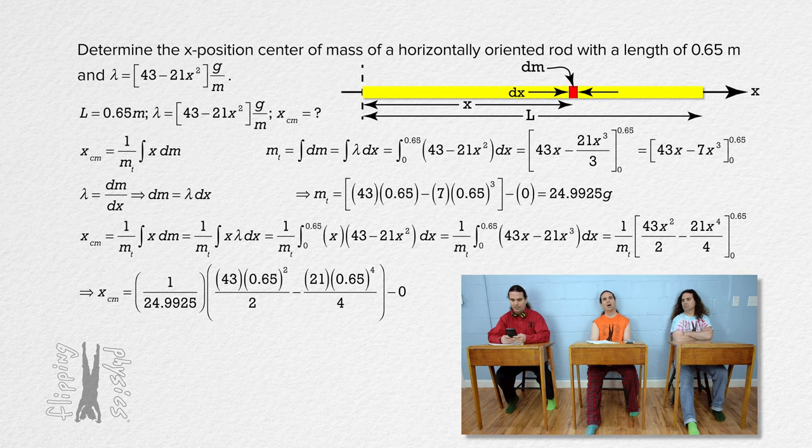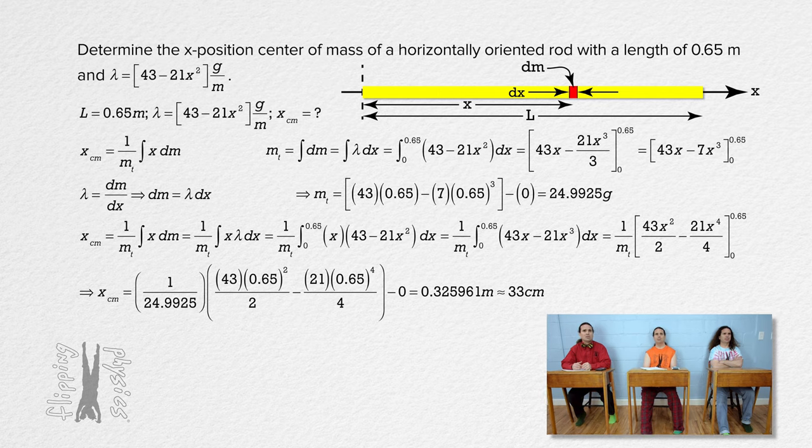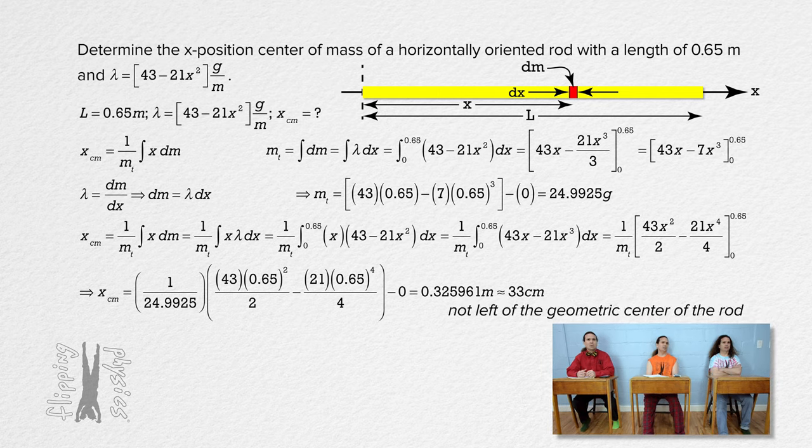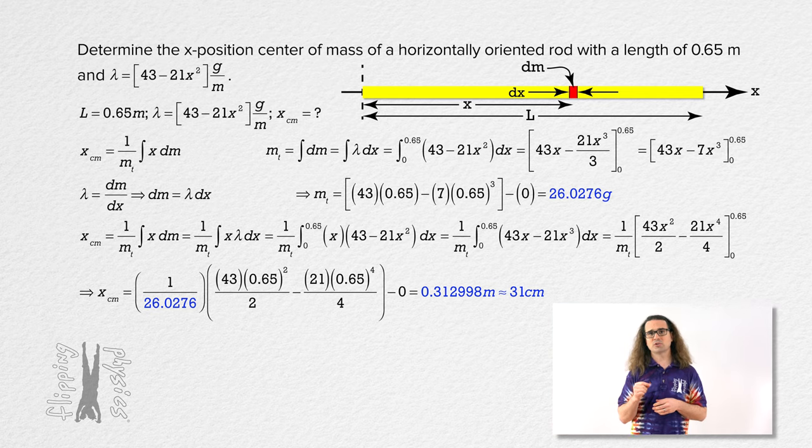Hold up. 0.325961 meters or, well, 33 centimeters with two sig figs and in centimeters. That's not right. Yeah, it's to the right of the geometric center of the rod. Wait, we don't even get to say that physics makes sense? Nope, we made a mistake. Where? We failed to use a calculator correctly. Beau, you squared 0.65 rather than cubed it. Our total mass calculation is incorrect. The total mass of the rod, when calculated correctly, is 26.0276 grams.